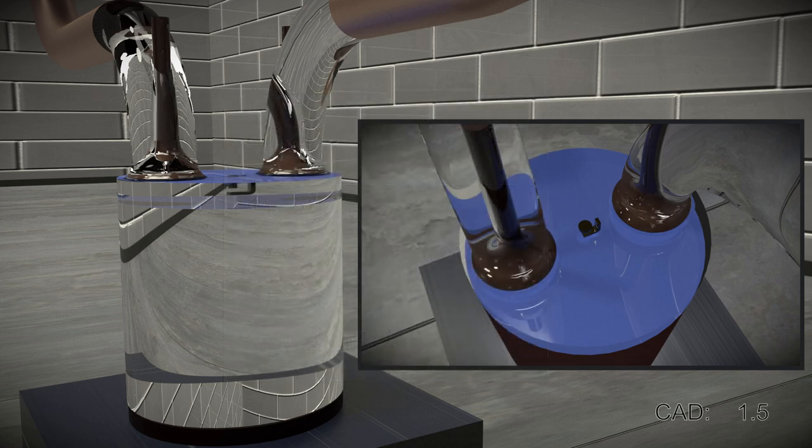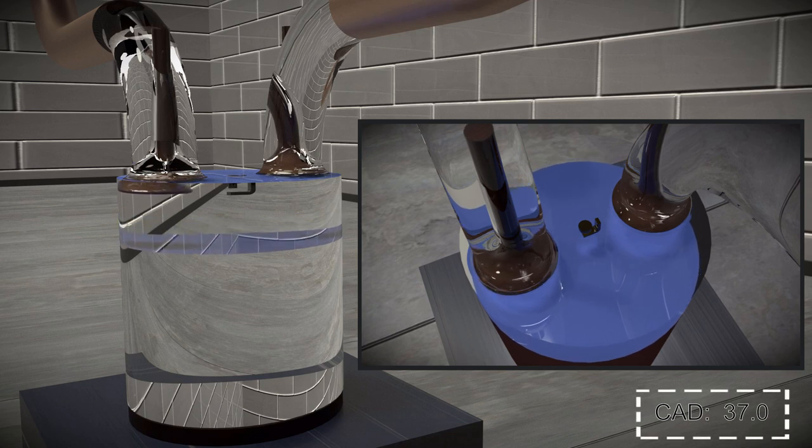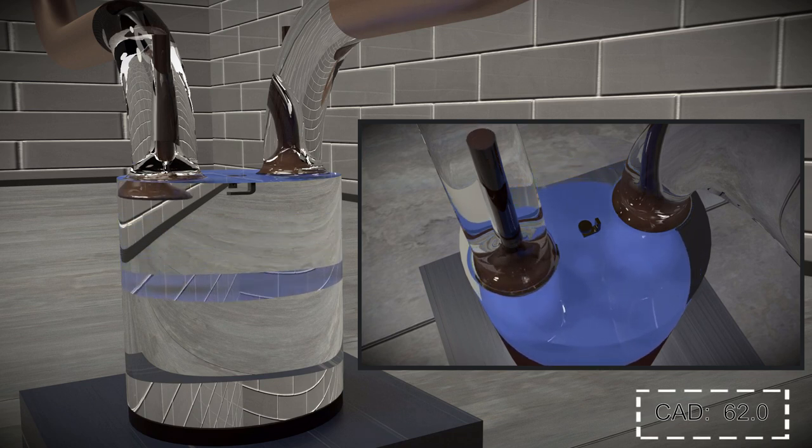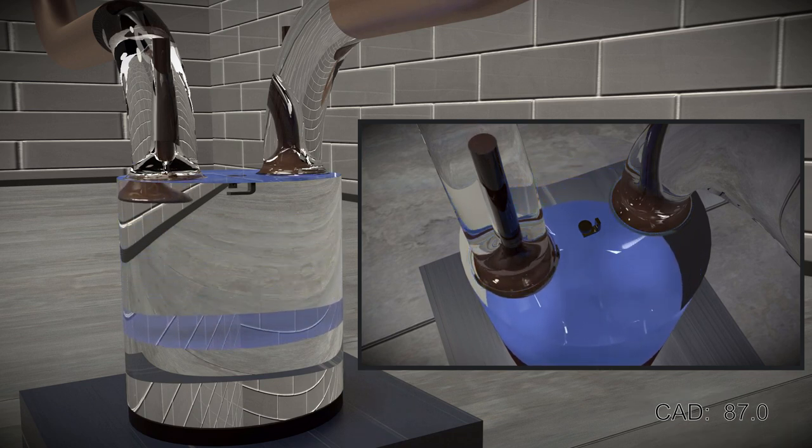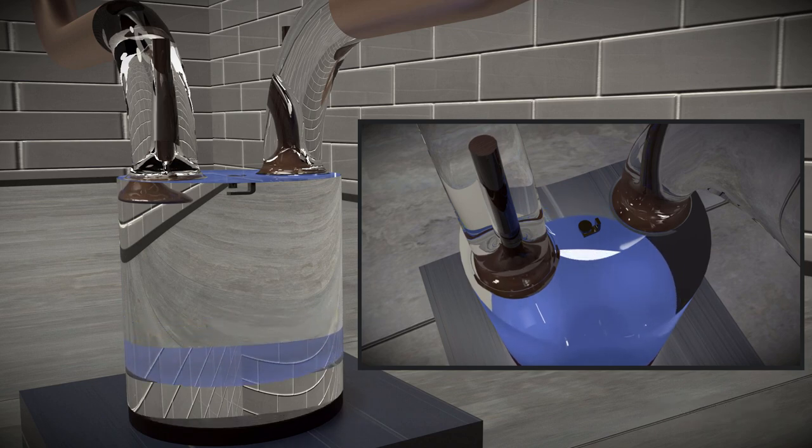Time in simulations like these is measured in crank angle degrees, or CAD, as shown in the lower right. This indicates the angle of the crank, which turns and moves the piston up and down in the chamber.